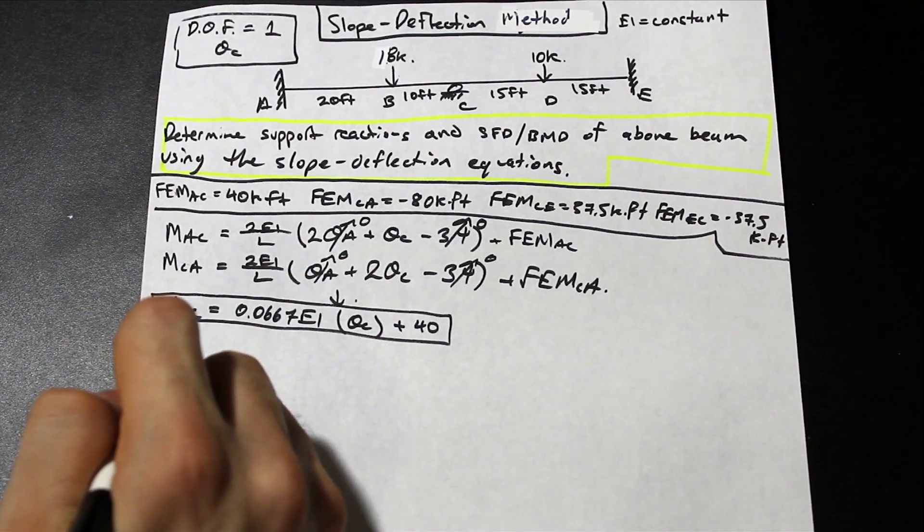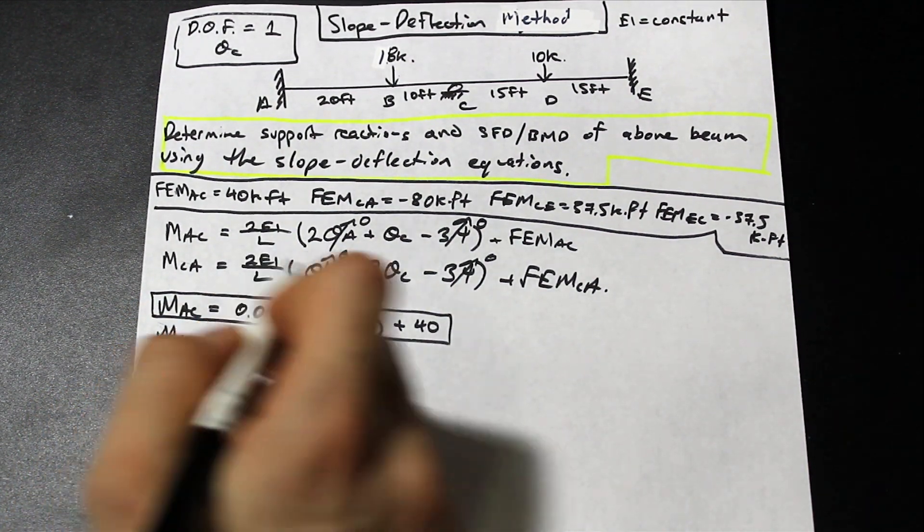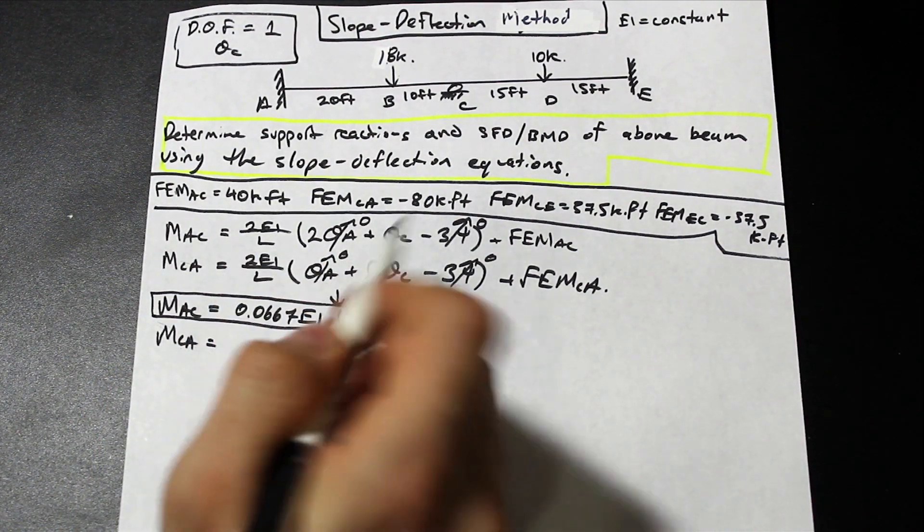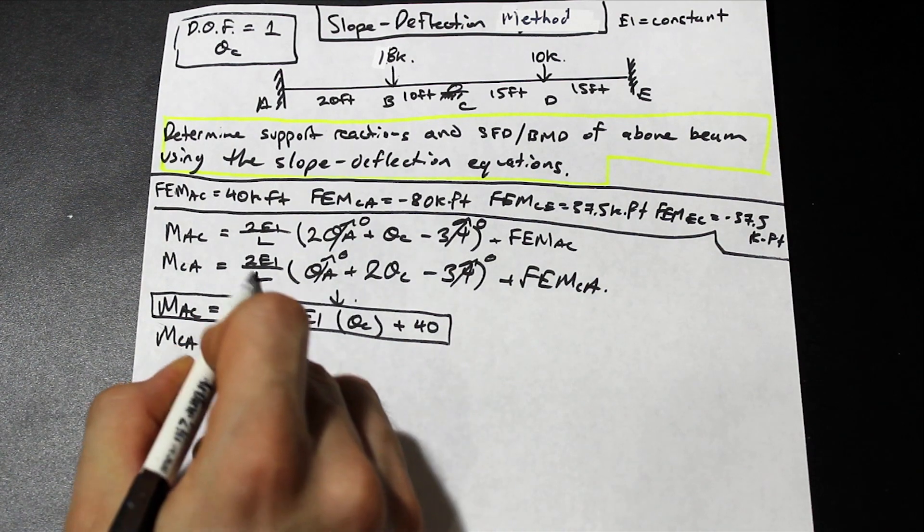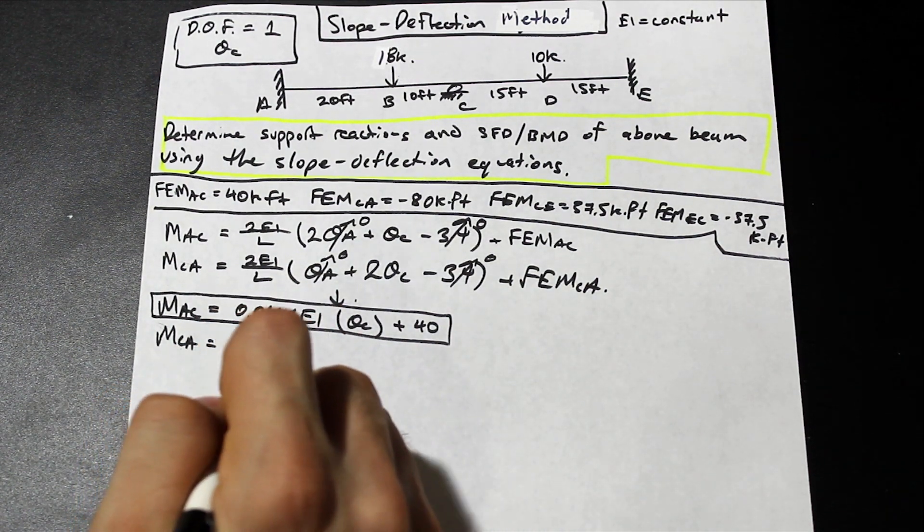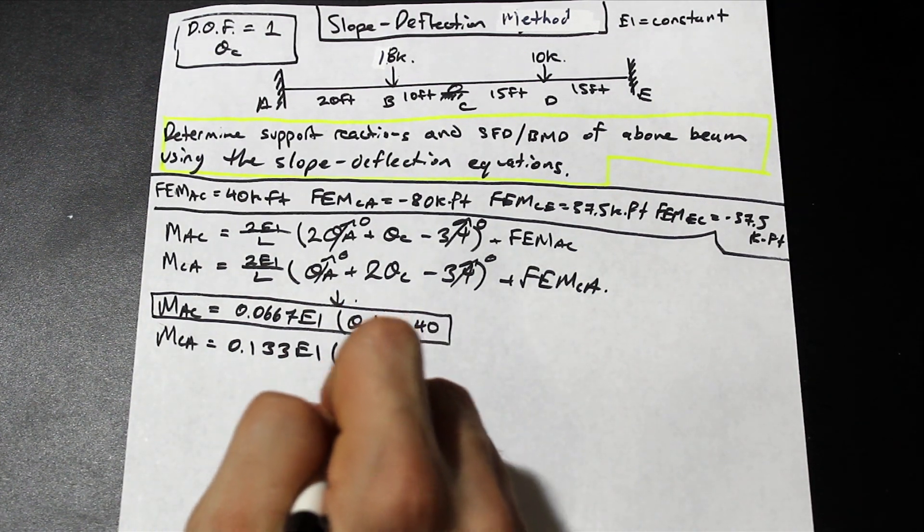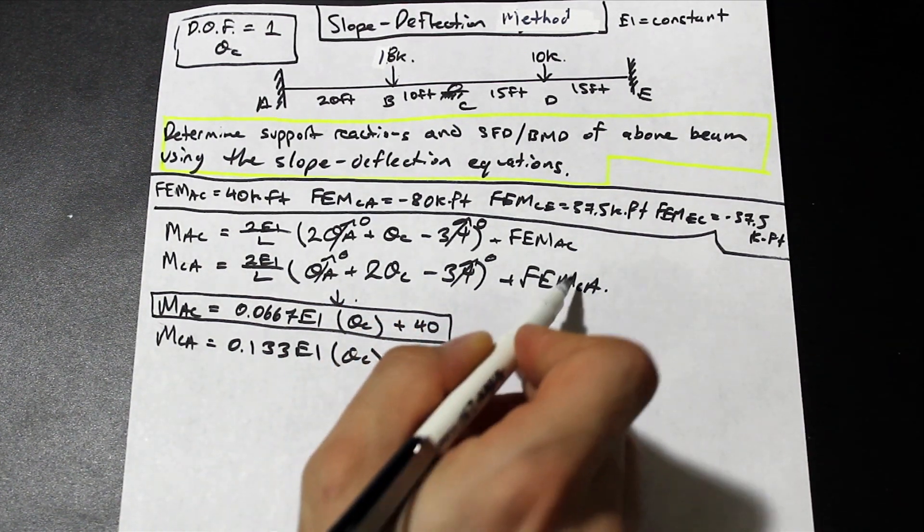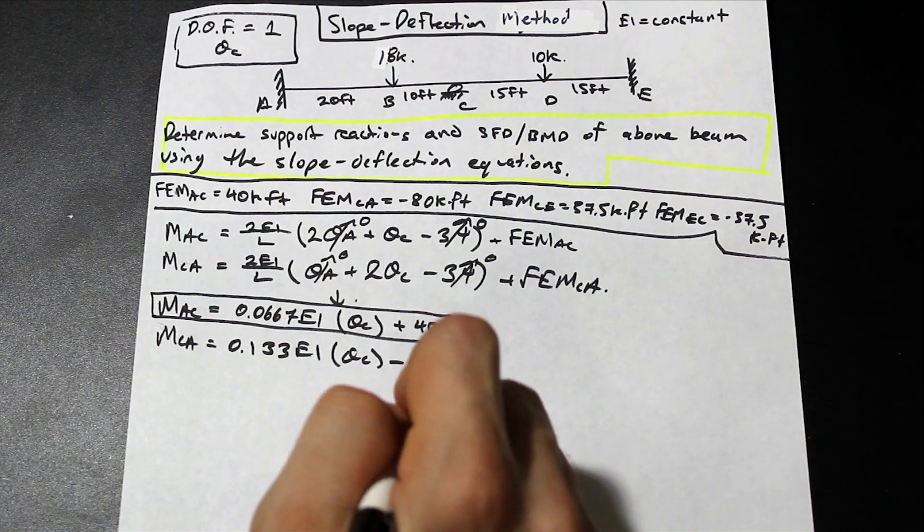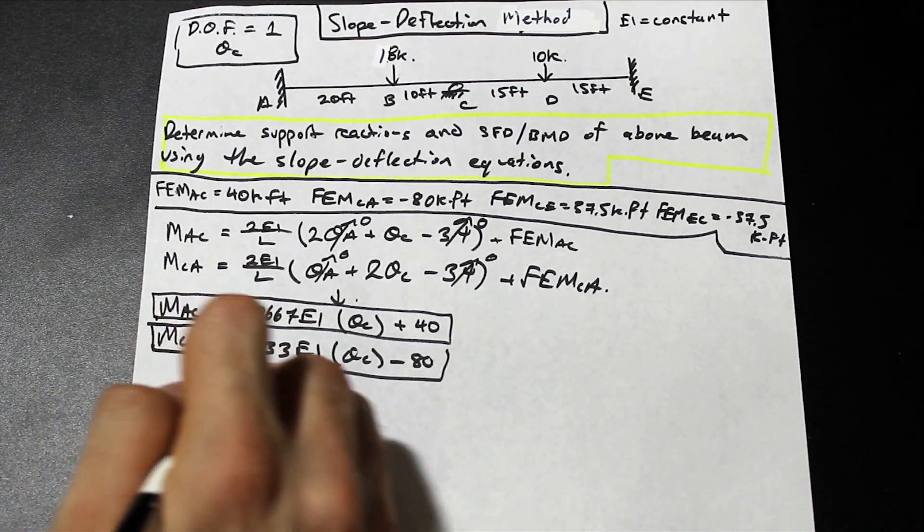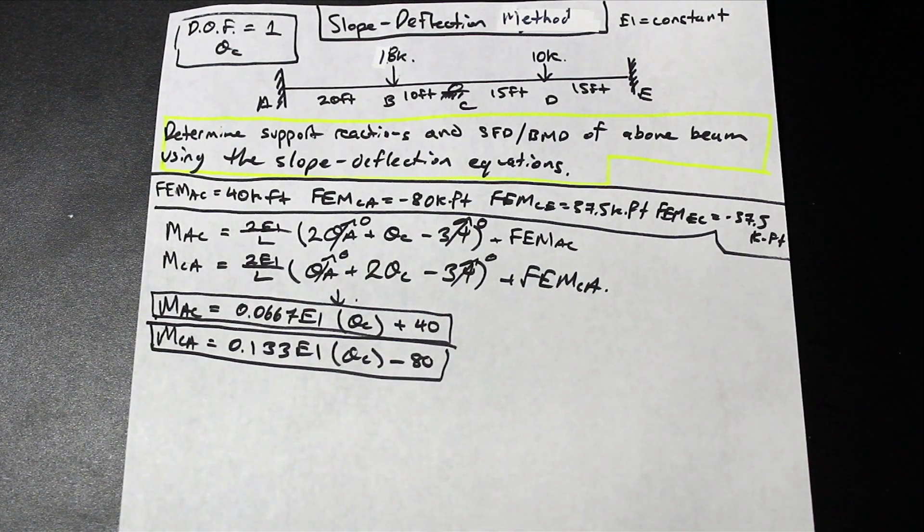All right, let's go on to MCA, so we have MCA. And now we have 2 times 2 here, so let's not forget that. So that's going to be 4 divided by 30, so that's 0.133EI times θC, and the FEM at CA is minus 80. So that's our second slope deflection equation complete. Cool, so we're almost there, we're on our way.